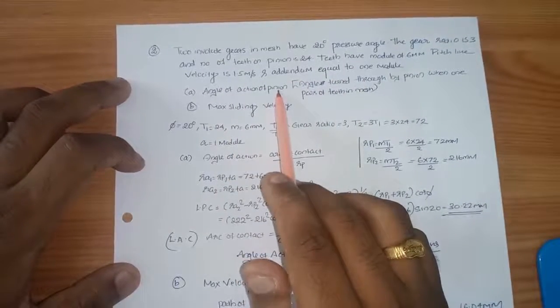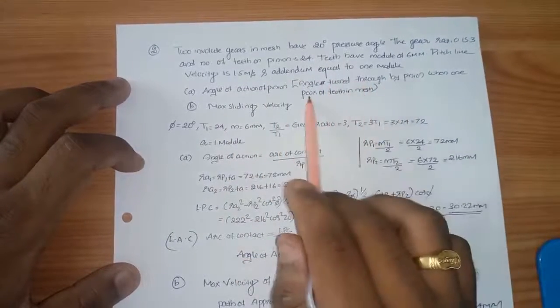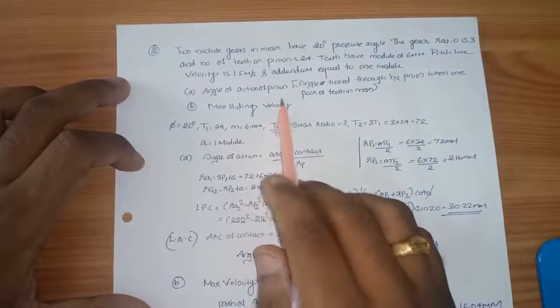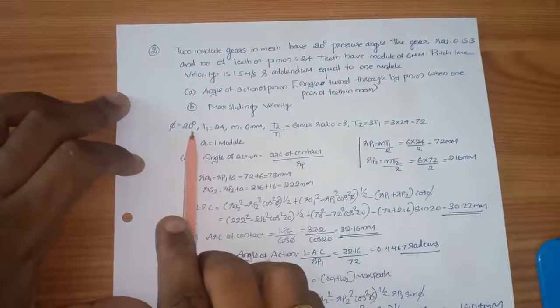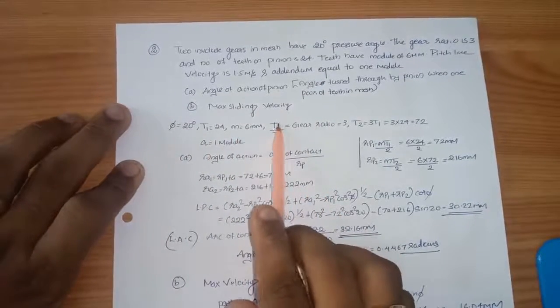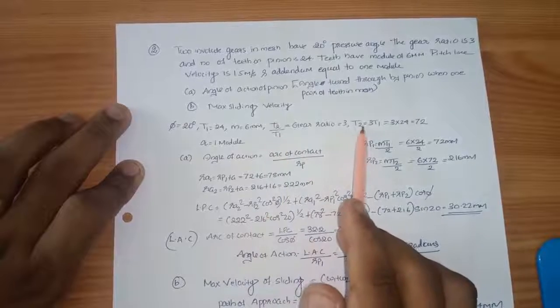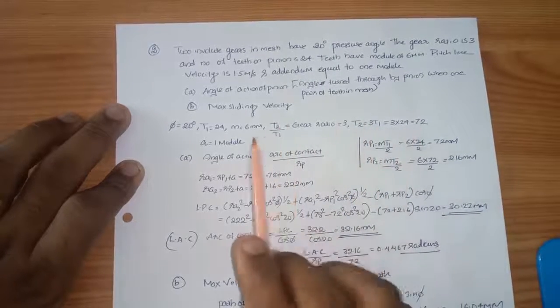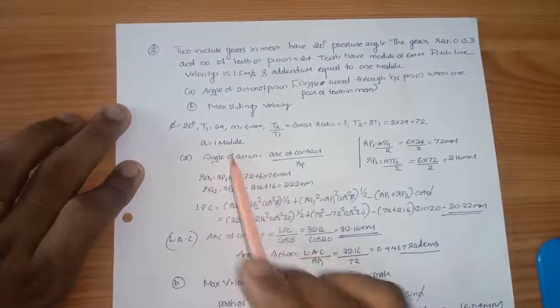First, angle of action of pinion is the angle turned by pinion when one pair of teeth in mesh. Maximum sliding velocity. Given: pressure angle, T1, module. Gear ratio is T2 by T1. Addendum equal to 1 module.